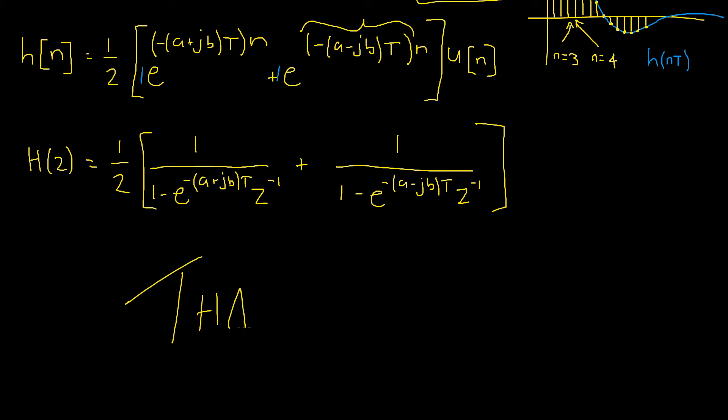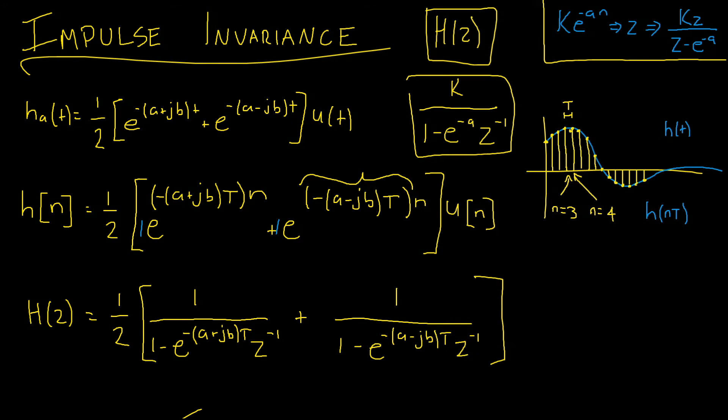Thanks for watching. This might have seemed quick and easy—I hope that was the case actually—and typically the hardest part of the impulse invariance method is simply just rearranging your analog filter to get it in a form where you can easily take the Z transform.